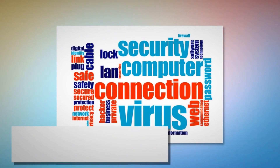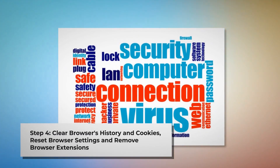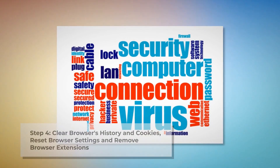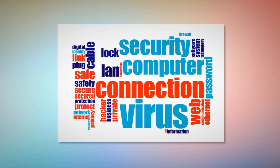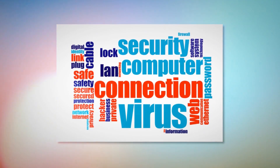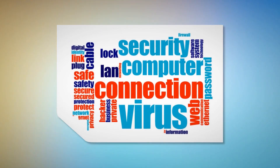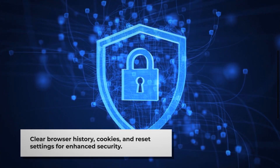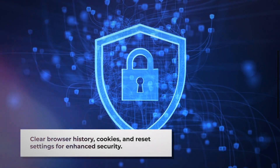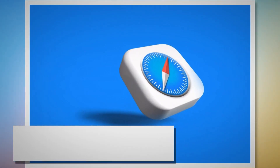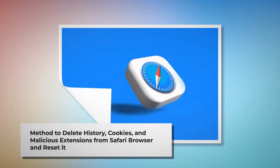Step four: clear your browser's history and cookies, reset browser settings, and remove or disable unknown browser extensions to be safe from adware. Once you delete the harmful files as mentioned in step three, you should delete malicious or unknown extensions from your browsers like Safari, Chrome, Firefox, Opera, and so on — whichever you are or were using. You should also delete browser history and cookies from your browser and reset your browser. Note: before you reset your browser settings, it is always a good idea to back up your bookmarks.